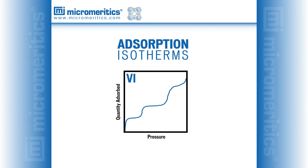This slide illustrates a Type VI adsorption isotherm. This isotherm corresponds to a non-porous adsorbent with a completely uniform surface. The uptake of gas takes place layer by layer, the formation of each layer giving rise to a new step in the isotherm until bulk condensation of the gas occurs. Such an isotherm can be generated by adsorbing krypton at 90 Kelvin on a carbon black graphitized at 2700 degrees C.